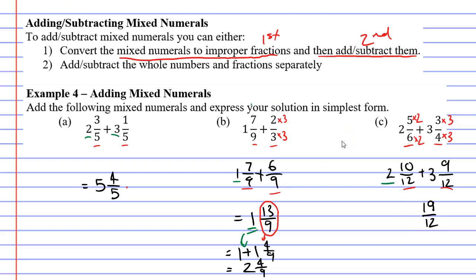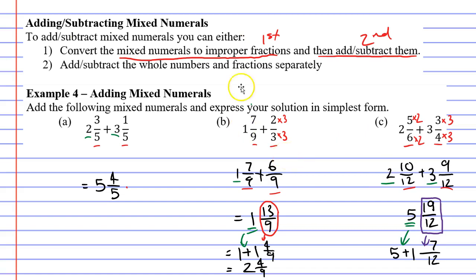Adding the numerators, ten plus nine gives me nineteen. Next I add the whole numbers two and three — two plus three makes five — so I get the mixed numeral five and nineteen-twelfths. But I can't have an improper fraction in a mixed numeral, so I convert it: twelve fits into nineteen once with a remainder of seven, and the denominator stays as twelve, giving one and seven-twelfths. Carrying down the five and adding it to the one, five plus one is six. The final answer is six and seven-twelfths.